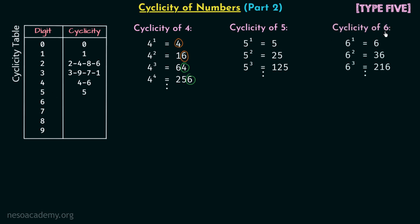For the cyclicity of digit 6, with increasing powers of 6 we are always getting 6 at the unit's place. So similar to 5, digit 6 will have the cyclicity equal to 6.